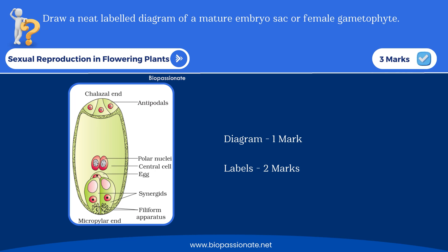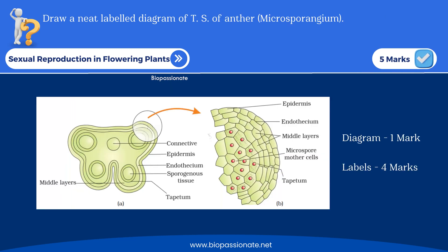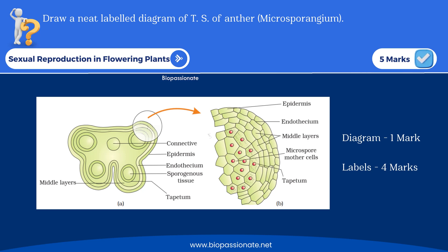Another diagram for three to five marks — usually they will ask this for five marks with explanation: draw a neat labelled diagram of the transverse section of anther or microsporangium.